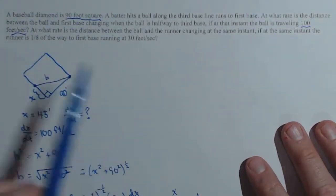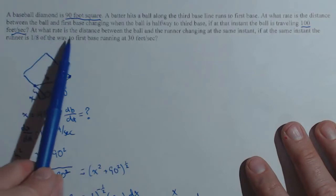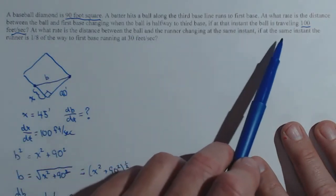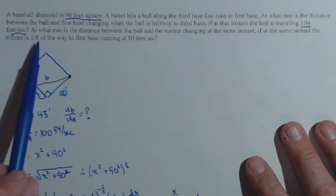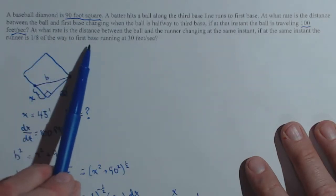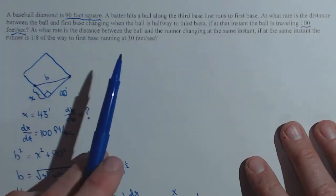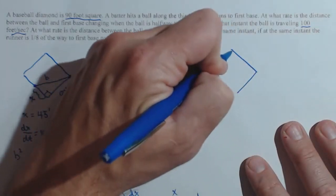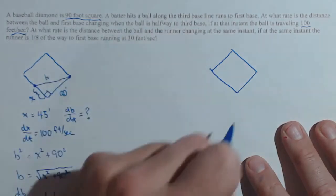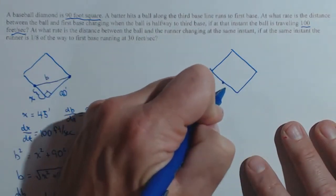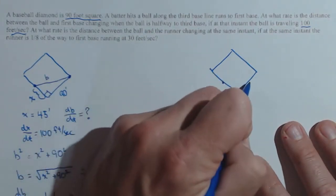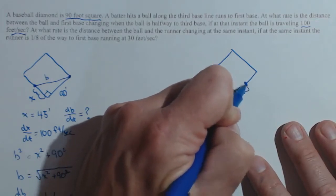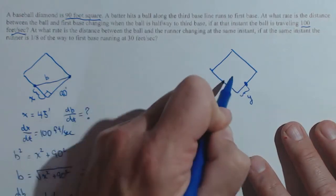Let's come back to our problem — the second question: at what rate is the distance between the ball and the runner changing at the same instant, if the runner is one-eighth of the way to first base, running at 30 feet per second? I'm going to redraw the diamond. The ball is still moving, so that's x. Now the runner is also moving, so I'll label the runner's distance y.